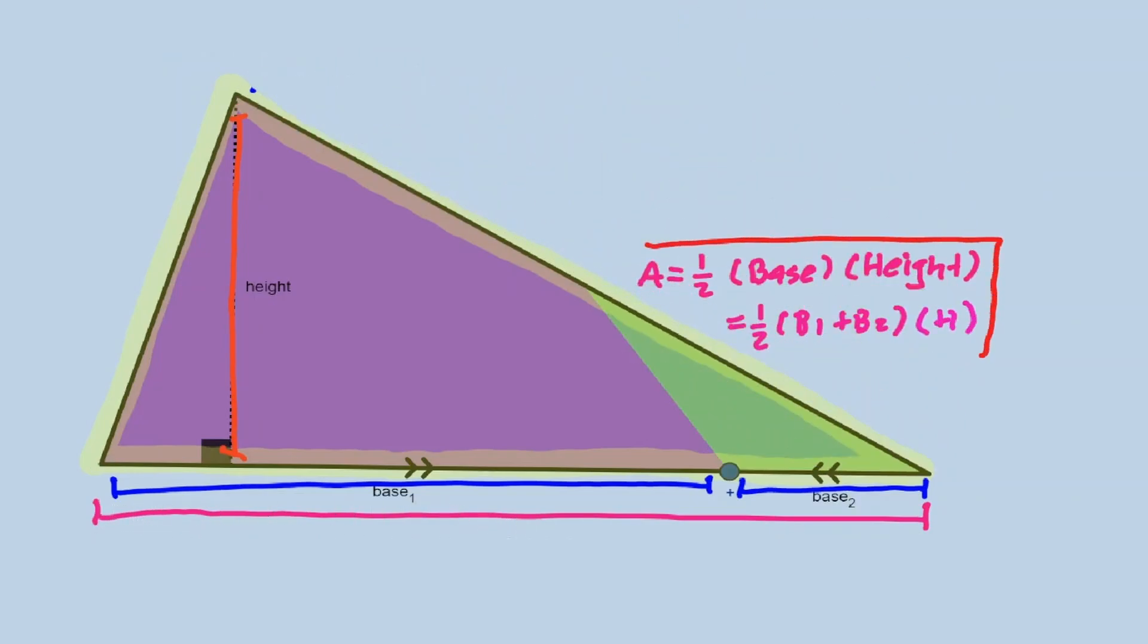So we have developed a formula to find the area of any trapezoid. It is equivalent to one half times the addition of both bases times the height of the trapezoid.